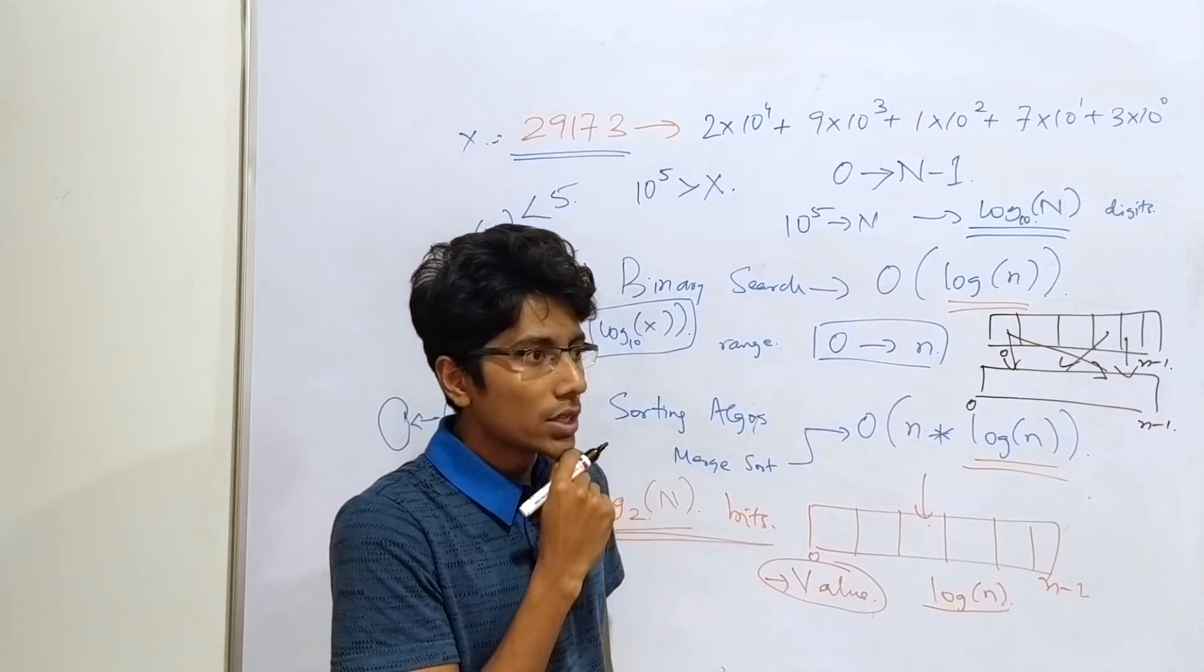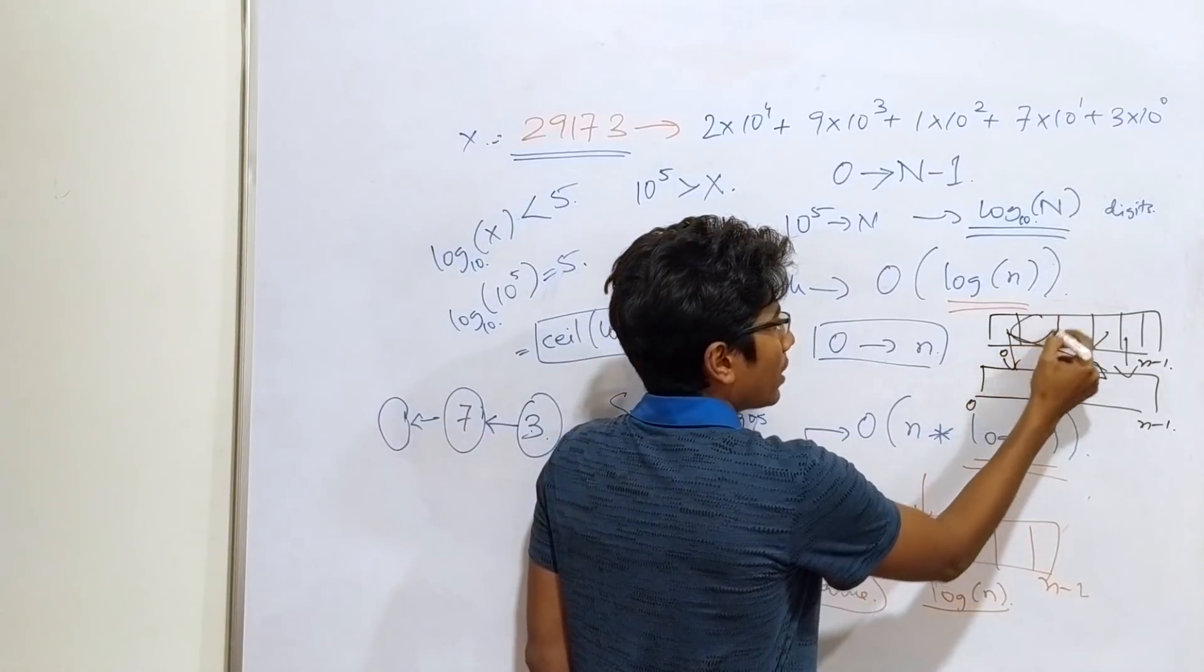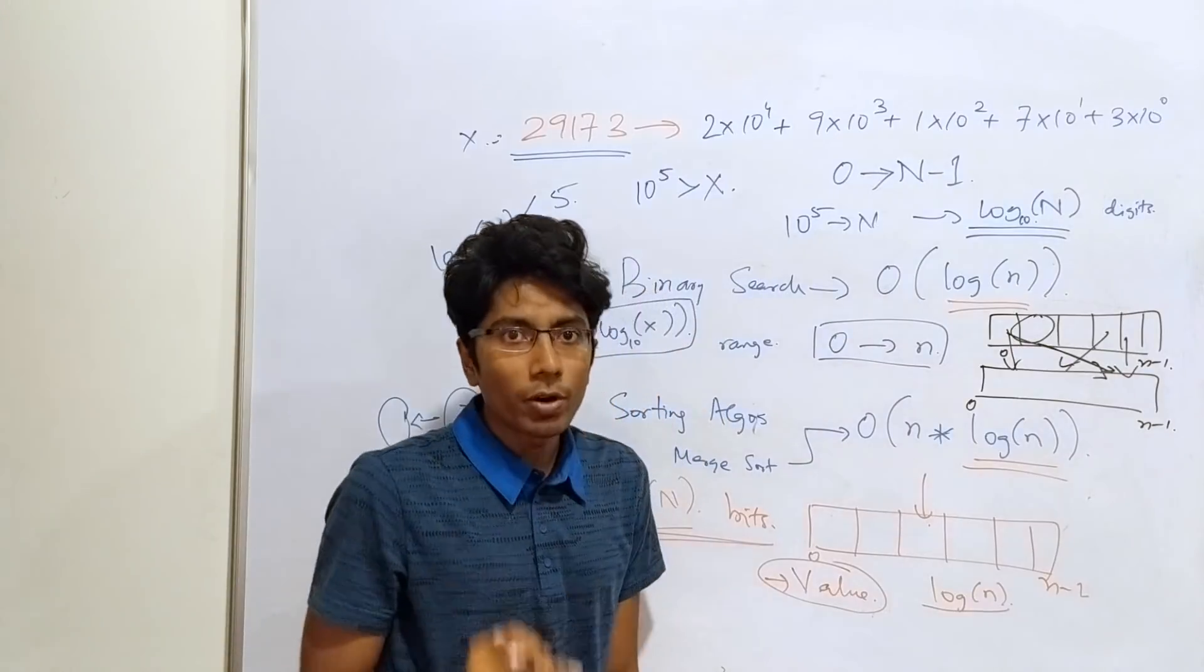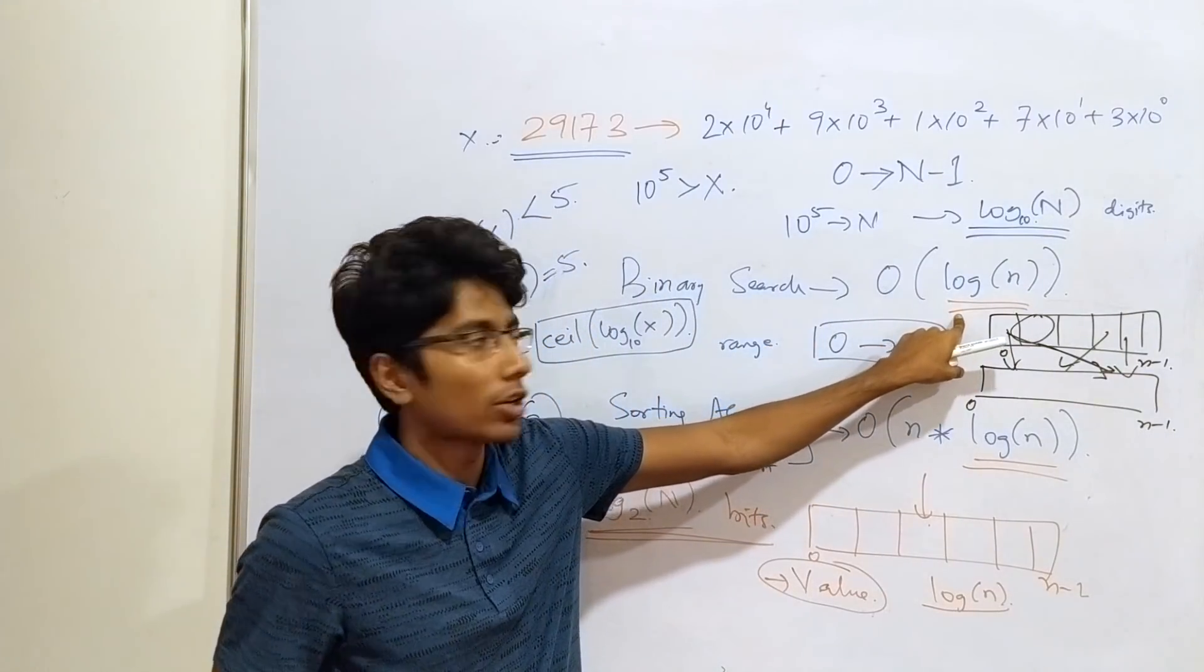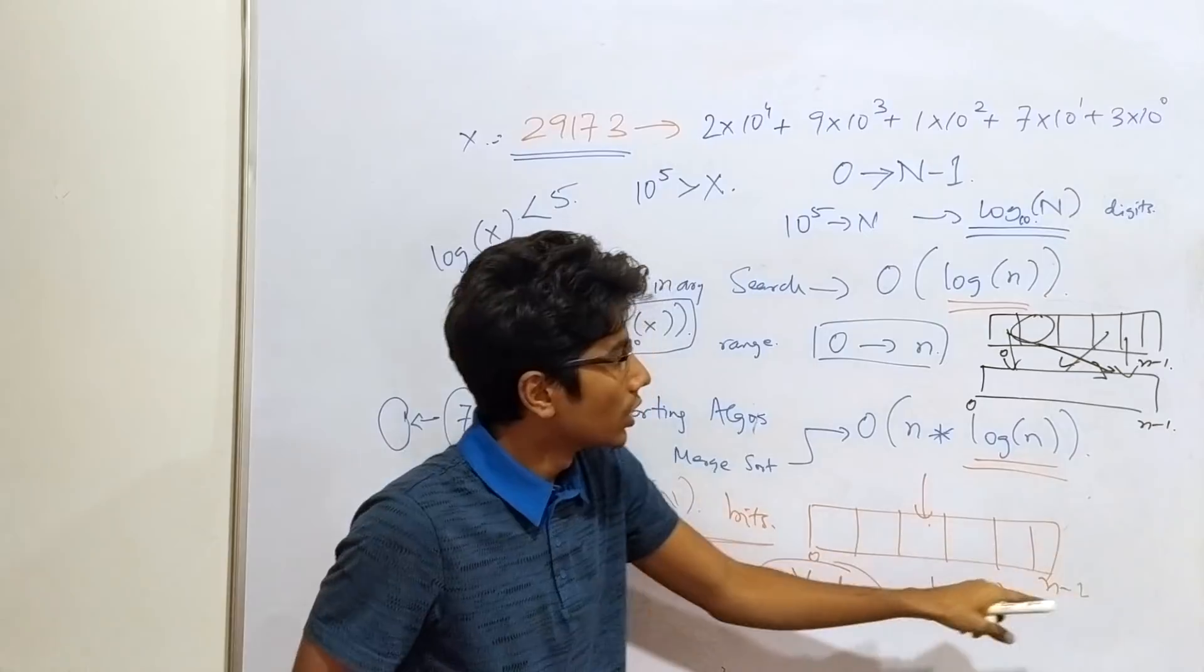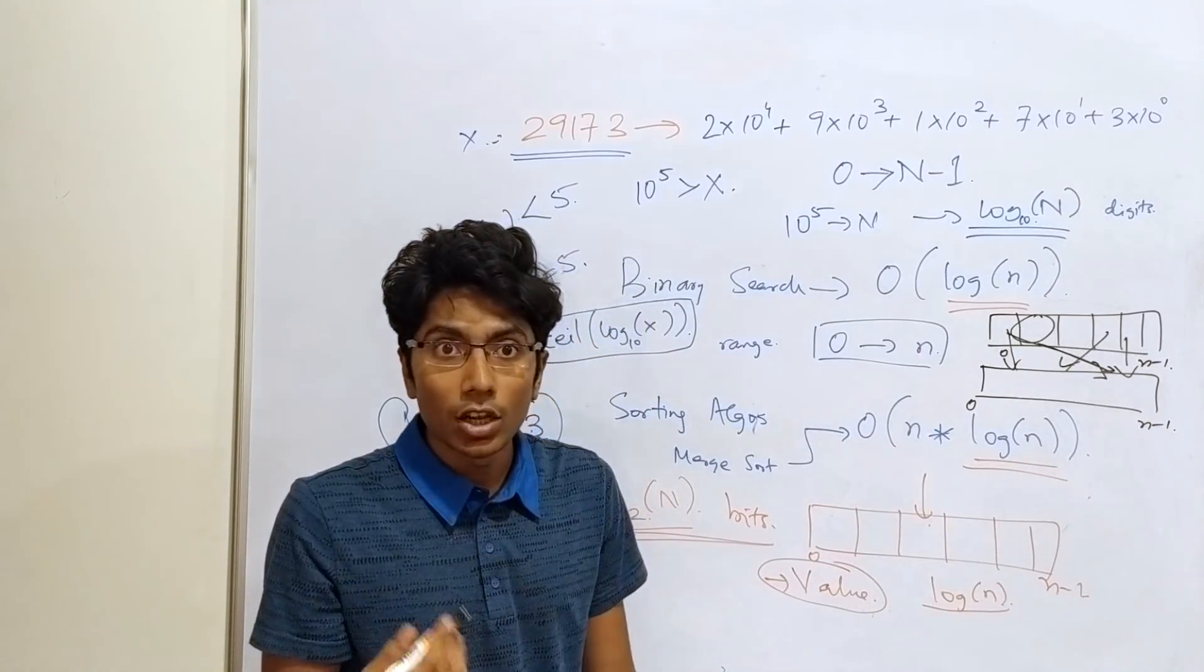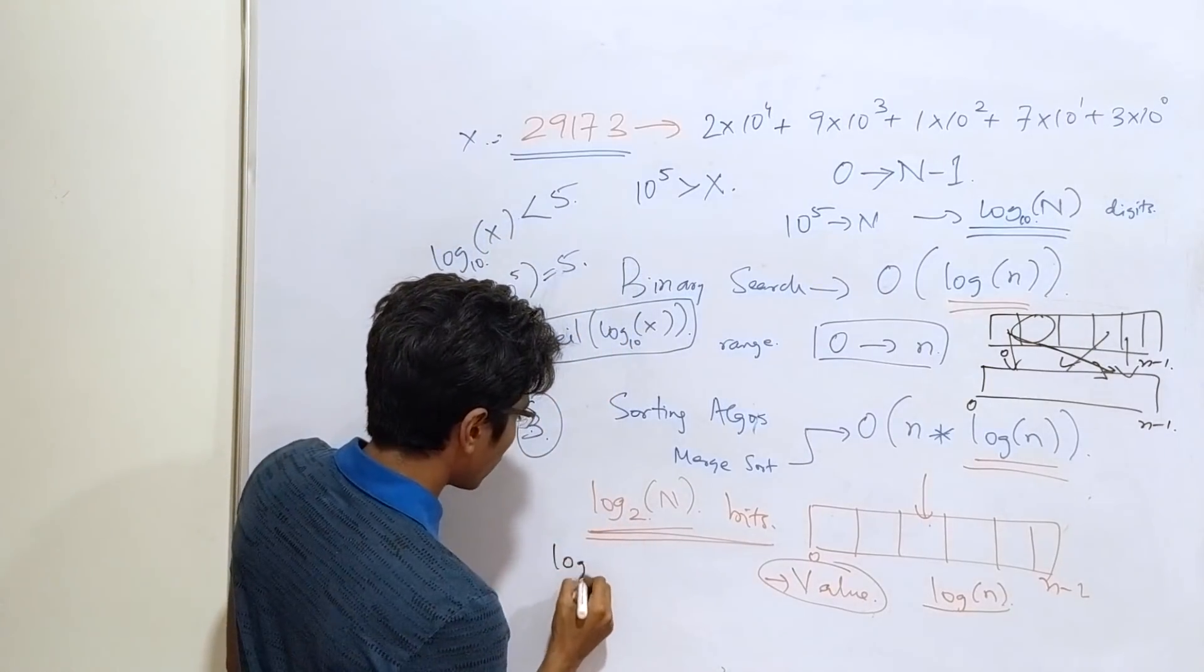So, how do we do this? Simply put, if you take any element and try to map its corresponding index in this array, you cannot perform better than the search algorithm you already had, the optimal search algorithm, which is going to take you log n time. Because there are n spots, the range is from 0 to n-1, you need to choose one spot. To find that correct spot, it's going to take you at least log n time.